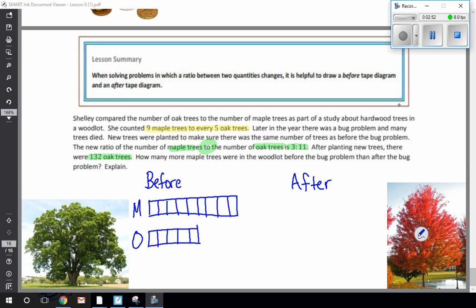And then after it was three to eleven, still maples to oaks. So I'm just going to use a different color for after. Three boxes for maple, and here's eleven for oak. One, two, three, four, five, six, seven, eight, nine, ten, eleven. Let me verify: one, two, three, four, five, six, seven, eight, nine, ten, eleven. Good. I just wanted to make sure.